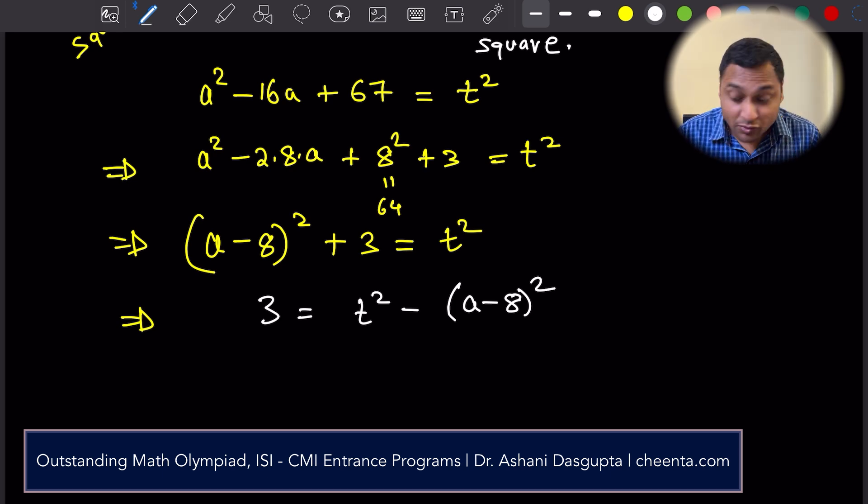I'll have t square minus a minus 8 whole square. Now, things become much more simpler because we have a square minus another square. It almost immediately brings us to the difference of square identity.